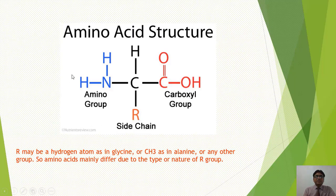Amino acids का एक general formula होता है। अगर हम amino acid के general structure को study करें तो इसके center में carbon का atom नजर आएगा। इस carbon को हम alpha carbon कहते हैं। इस alpha carbon के साथ four groups attached होंगे। एक होगा amino group NH2, दूसरा carboxyl group। Amino acid को amino acid इसलिए कहते हैं क्योंकि इसमें एक amino group होता है और एक acid group यानि carboxyl group।